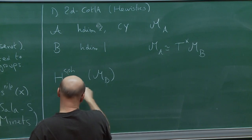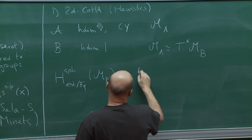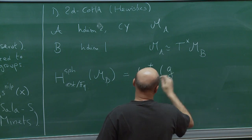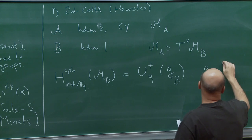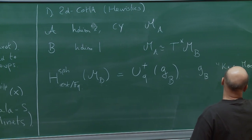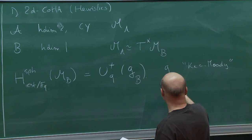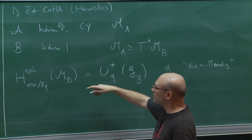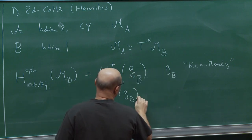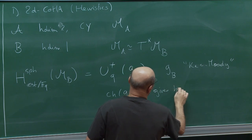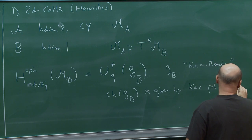In many examples — say quivers and curves — this constructible Hall algebra turns out to be the positive half of some quantum group G_B, say Kac-Moody. This Kac-Moody algebra G_B has character encoded by the so-called Kac polynomials of the category B: the character of G_B is given by the Kac polynomial A_B.